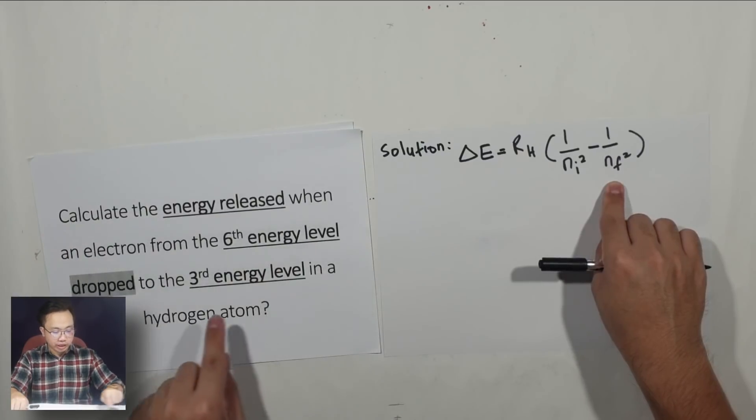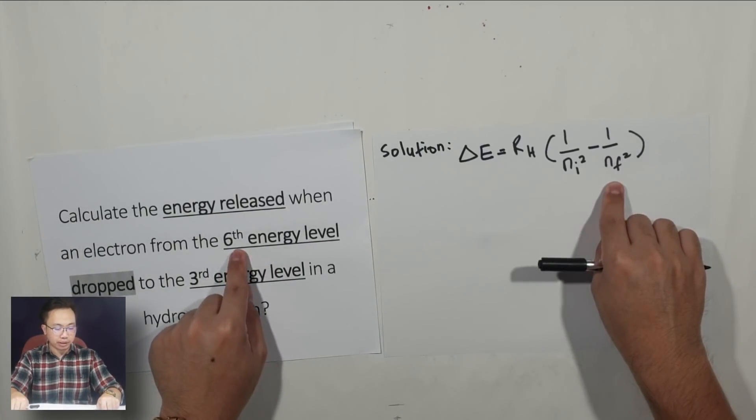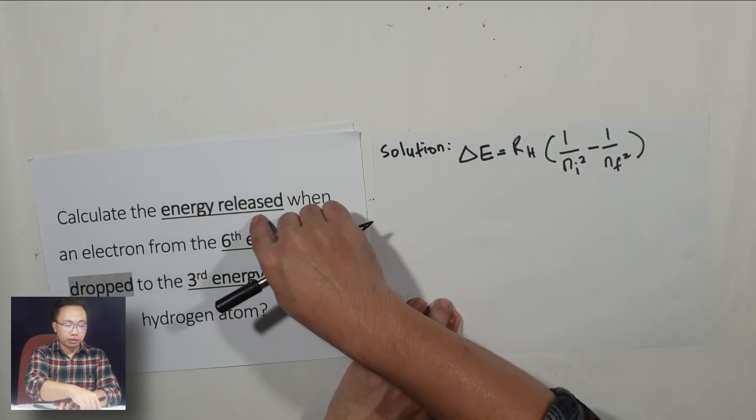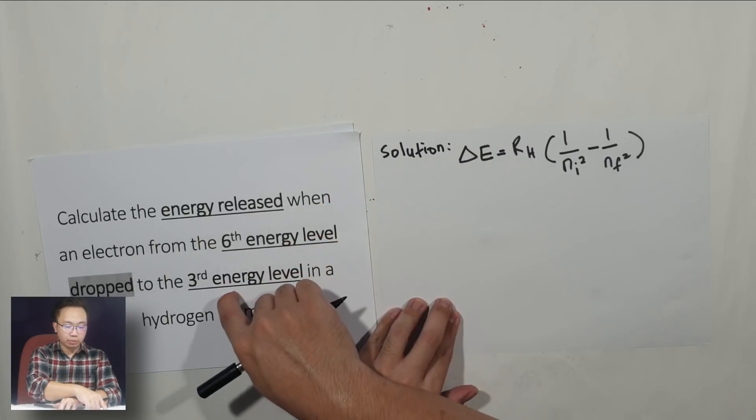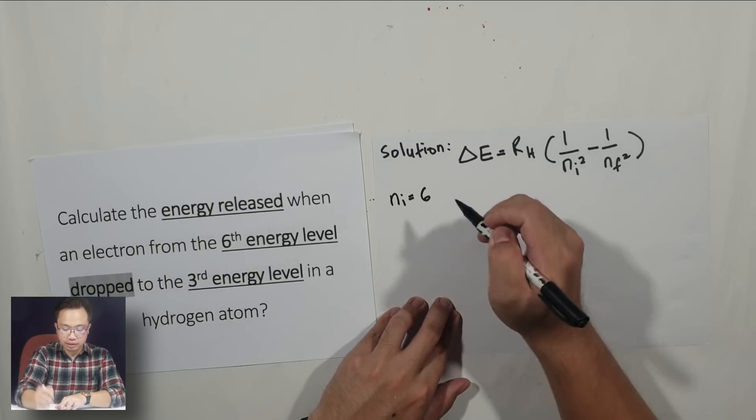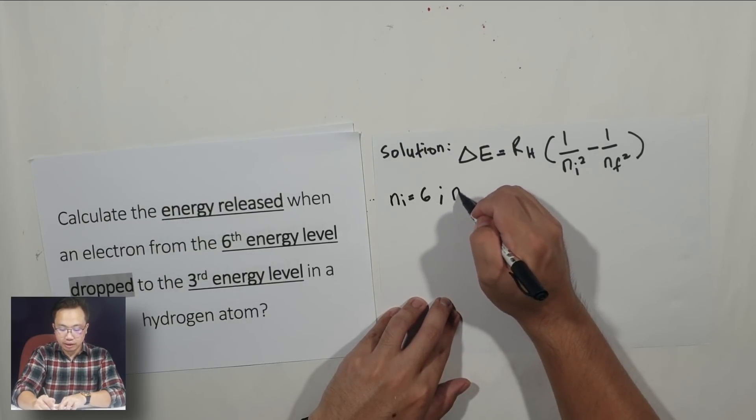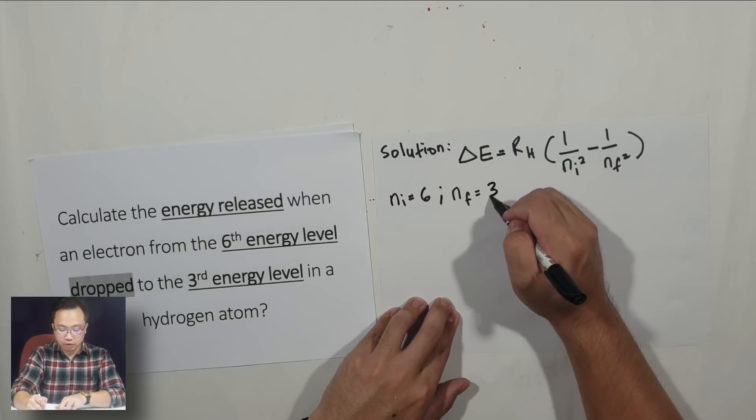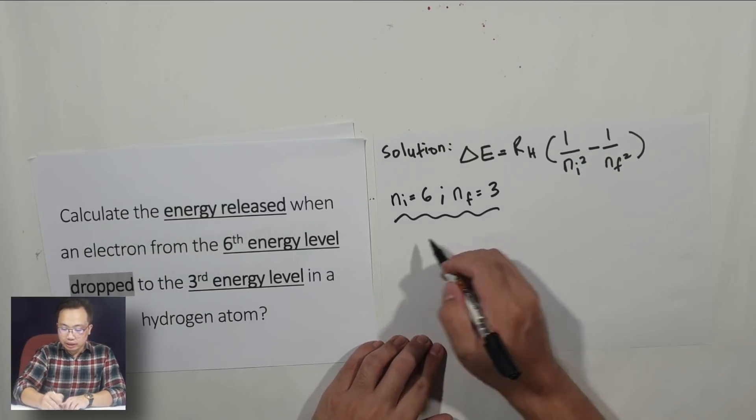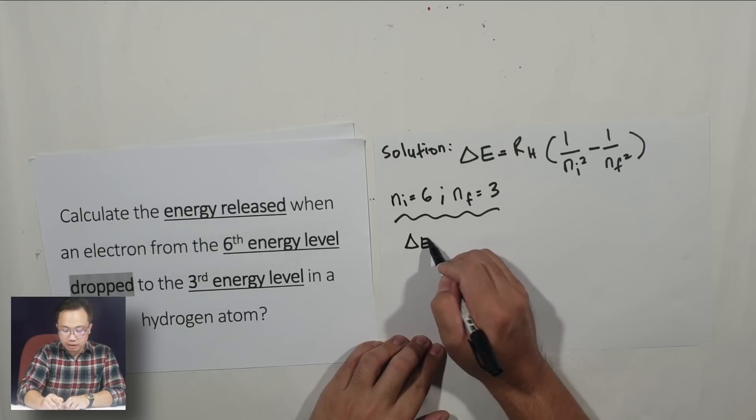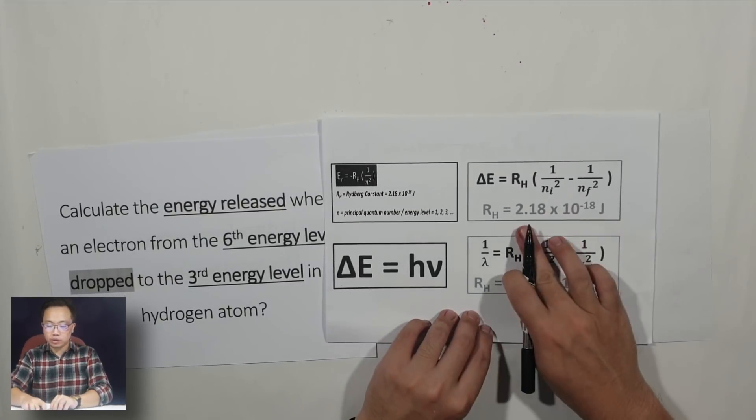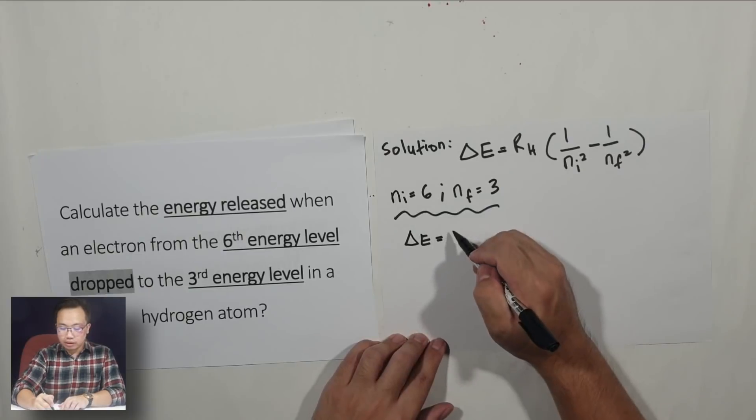According to this question, your N initial will be N equals to 6, because that is where the electron is coming from to release energy. And then, N final will be N equals to 3. We're going to write that down first. N initial is 6, and N final is 3. We're just going to substitute the value in here. Delta E equals to, don't forget, your RH value is 2.18 times 10 to the negative 18.